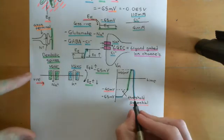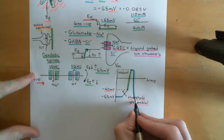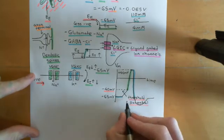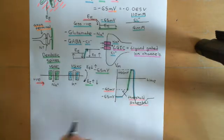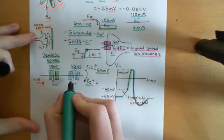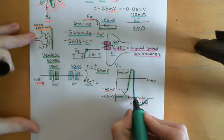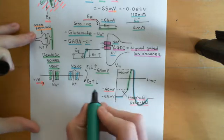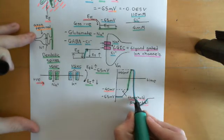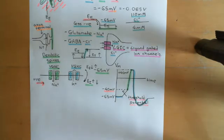There is a final phase of the action potential to discuss here: the action potential actually dips back down below negative 65 millivolts for a little while. This is caused partly by these voltage-gated potassium channels remaining open for a little bit longer, allowing out more potassium that takes you even below negative 65 millivolts.